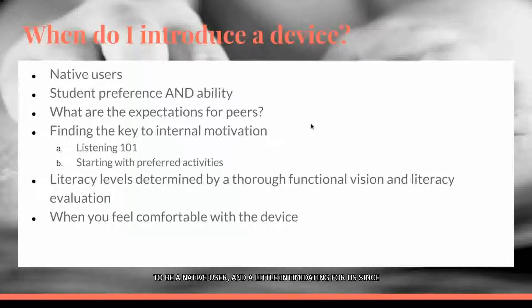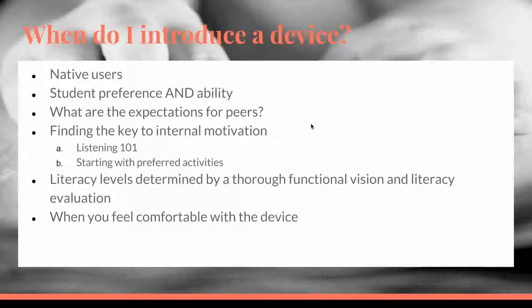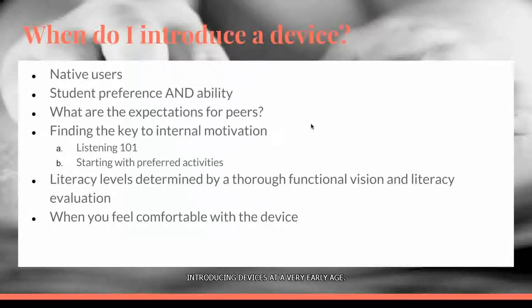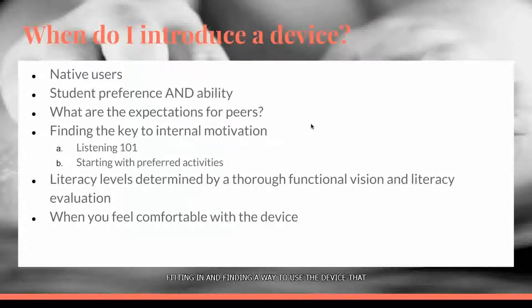We may be good at our phones and our tablets, but we're not native users. We need to understand that the older we get and the younger our students get, they are native users, and they desire to use these devices at the same speed as their peers. Peer expectations are also a factor that may vary from district to district depending on priorities, but many districts are introducing devices at a very early age. When our students are placed in those situations, we want them to be keeping up with their peers.